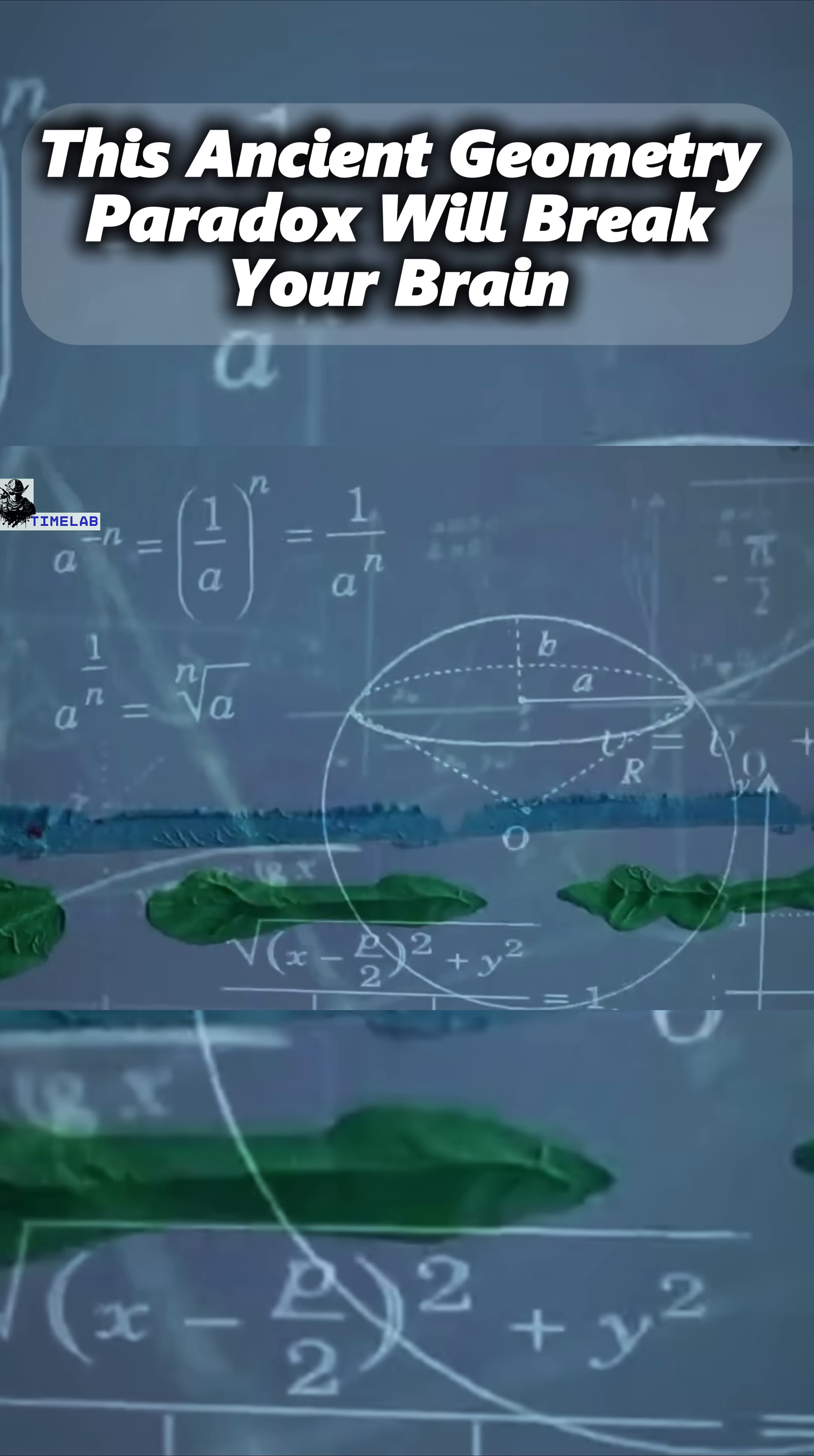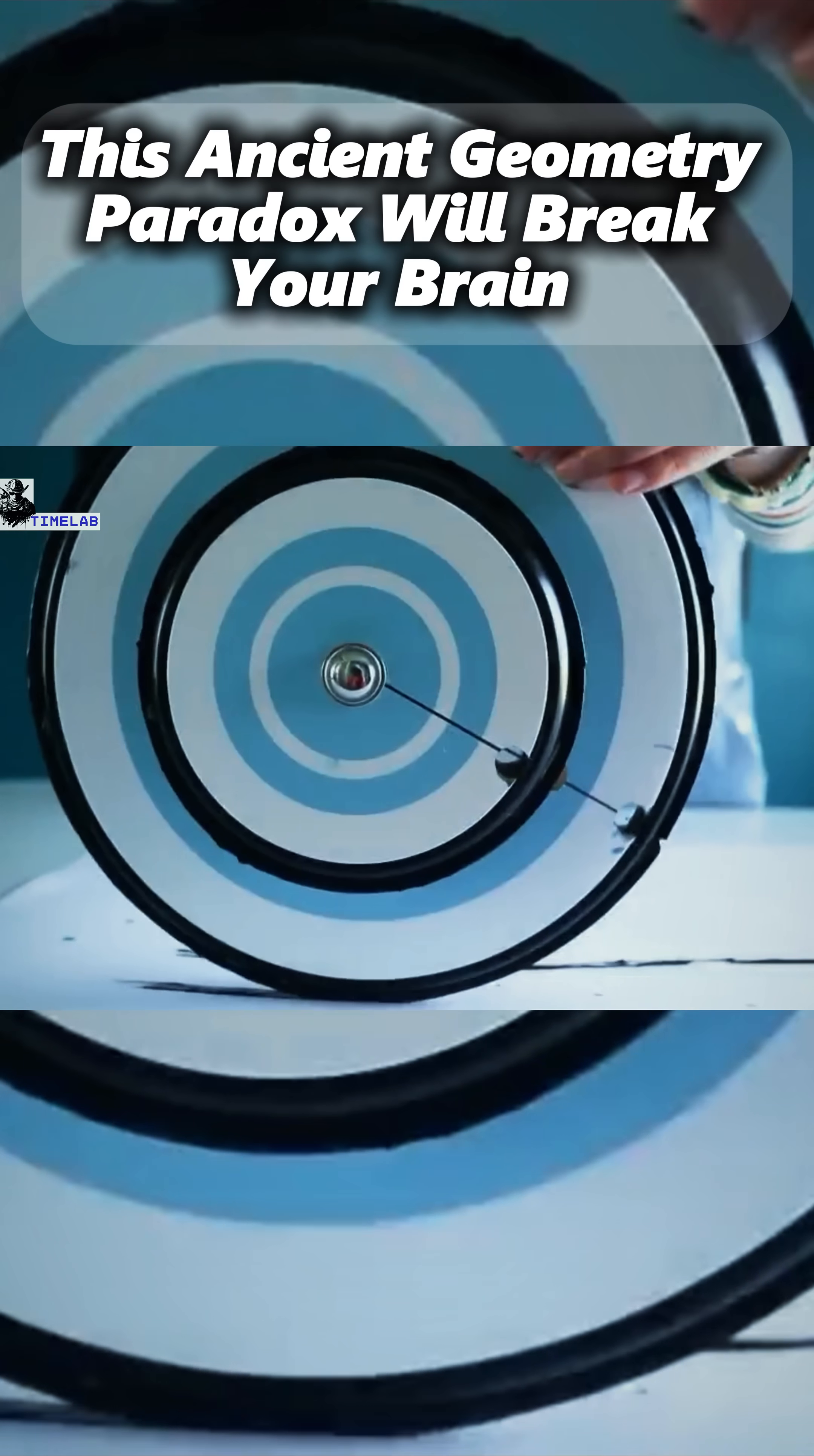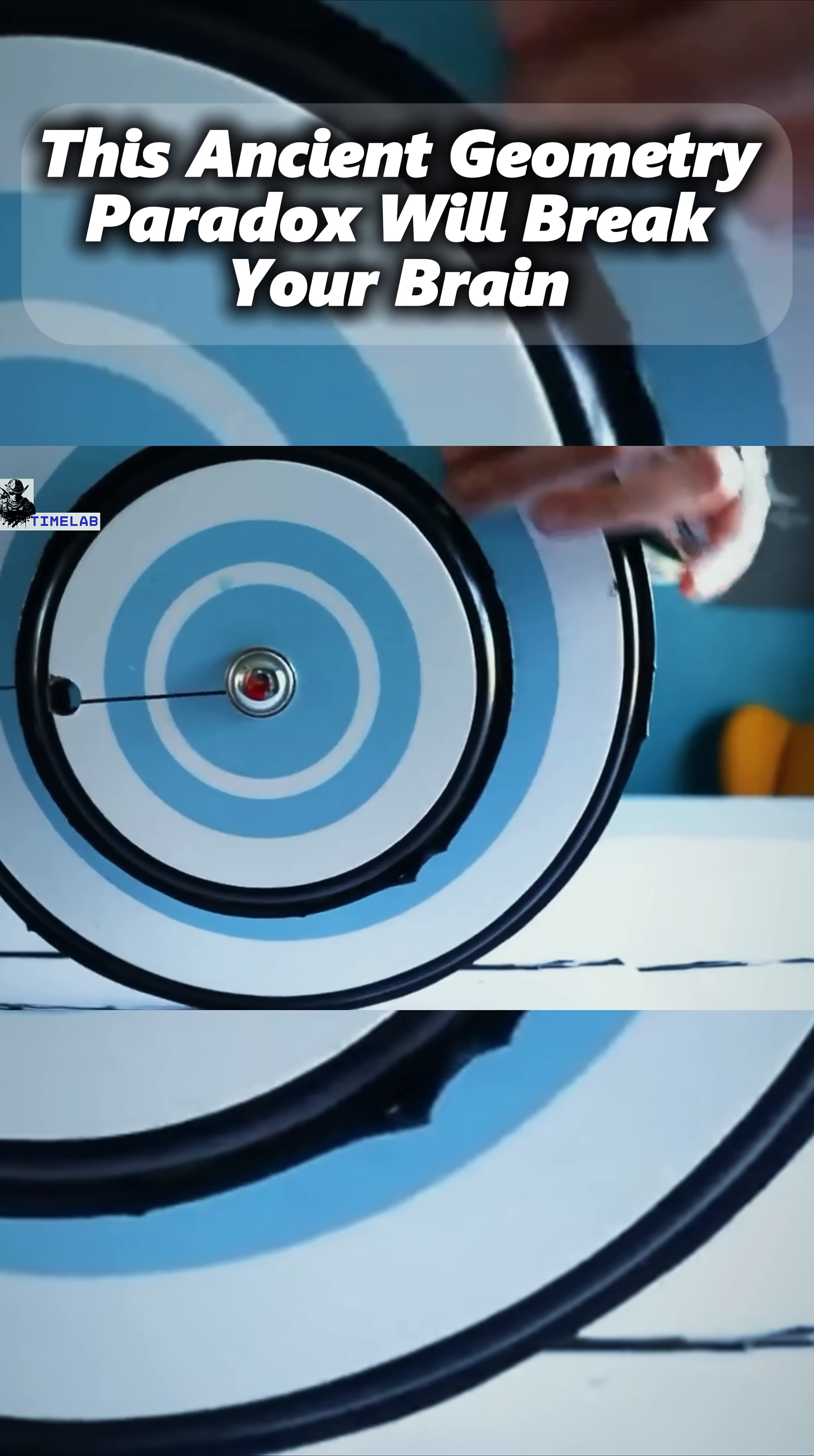That's when the truth started to reveal itself. When two concentric circles of different sizes roll together, only the large circle is truly rolling. The smaller inner circle is simply rotating along with it, but also sliding at the same time.